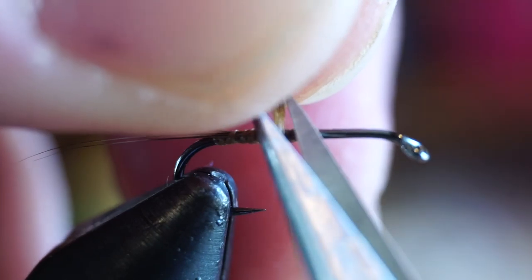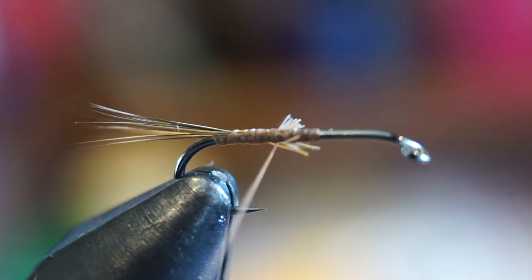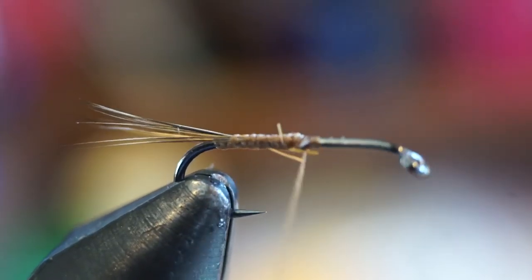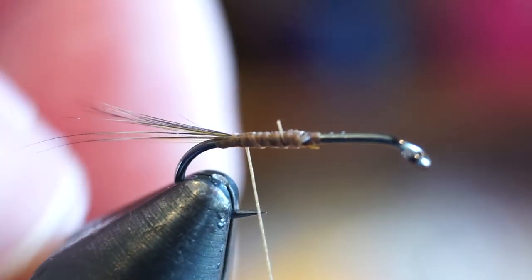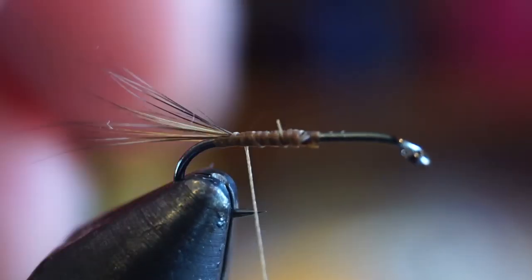Now trim off the tag ends about halfway up the hook shank like so, and then clean up that section with thread wraps, and then bring your thread back to the start of the tail. Then use your thumbnail to flare the tail out slightly like so.